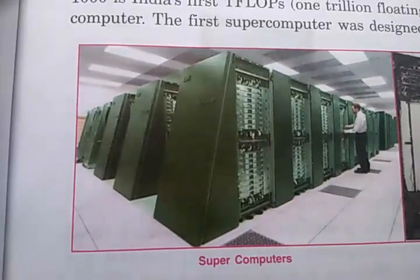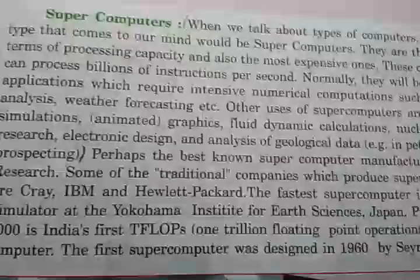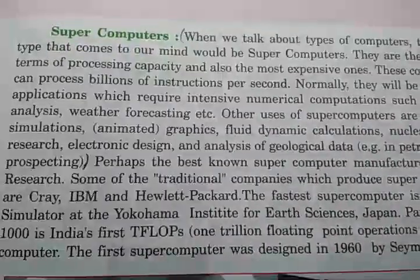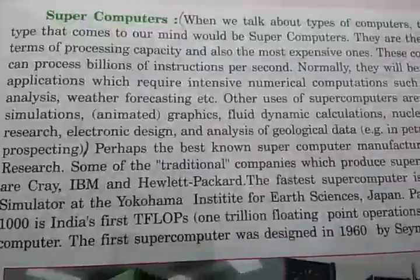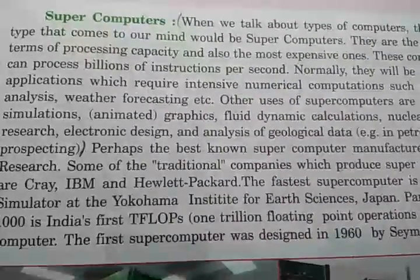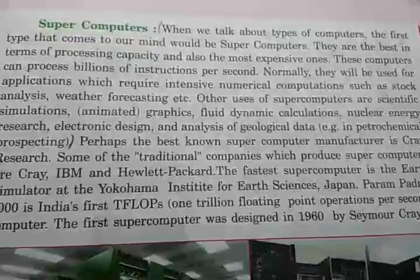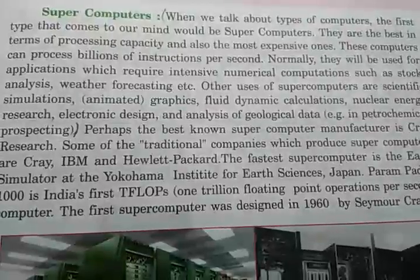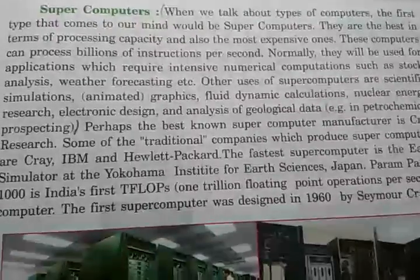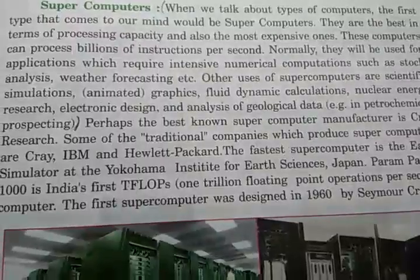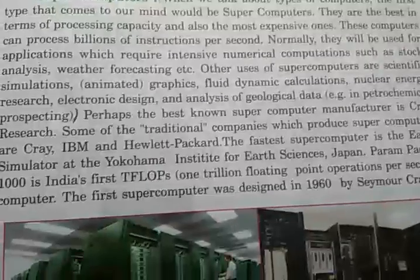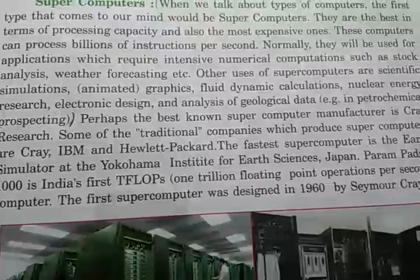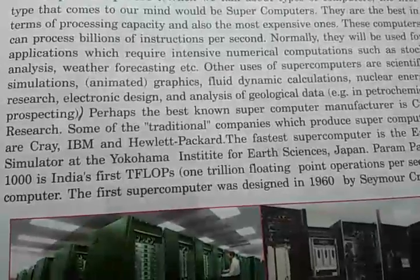Here is the diagram of a supercomputer. When we talk about these types of computers, the first type that comes to mind is the supercomputer. They are the best in terms of processing capability and also the most expensive. These computers can process billions of instructions per second, and are normally used for applications requiring intensive numerical computations such as stock analysis and weather forecasting.